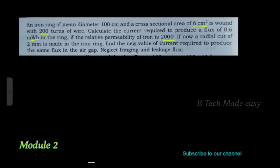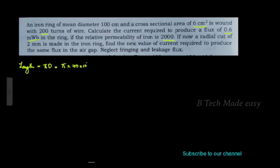If we call it a mean diameter, then we call it the circumference, then we call it the length. The length is π into d, which is π into 100 into 10 raise to minus 2 meter. The area of cross-section A is equal to 6 centimeter square, that is 6 into 10 raise to minus 4 meter square.